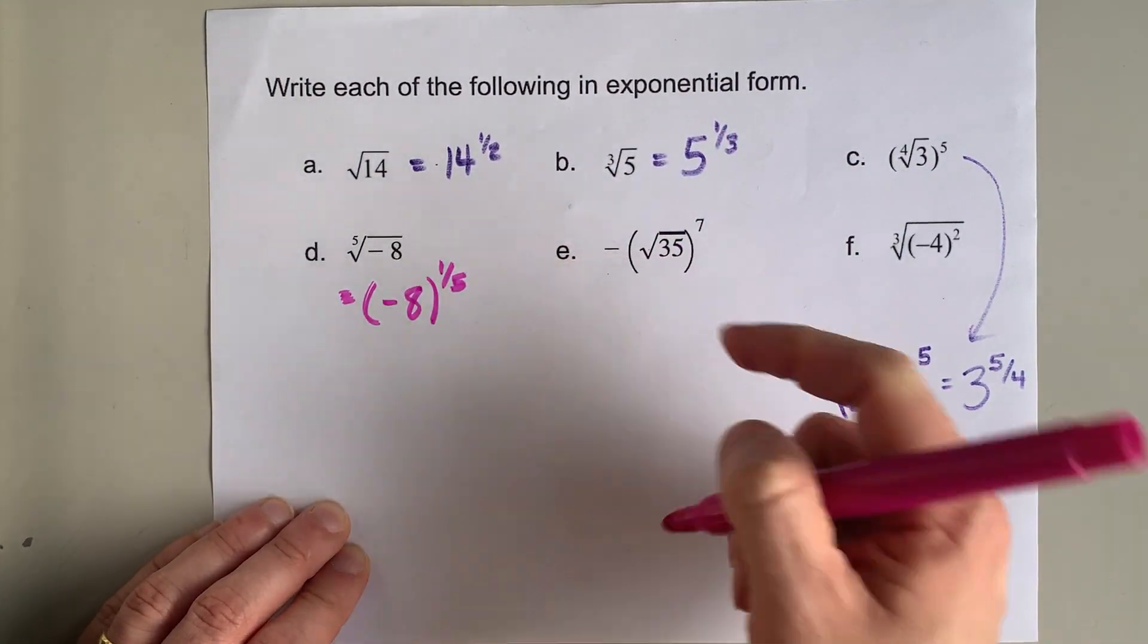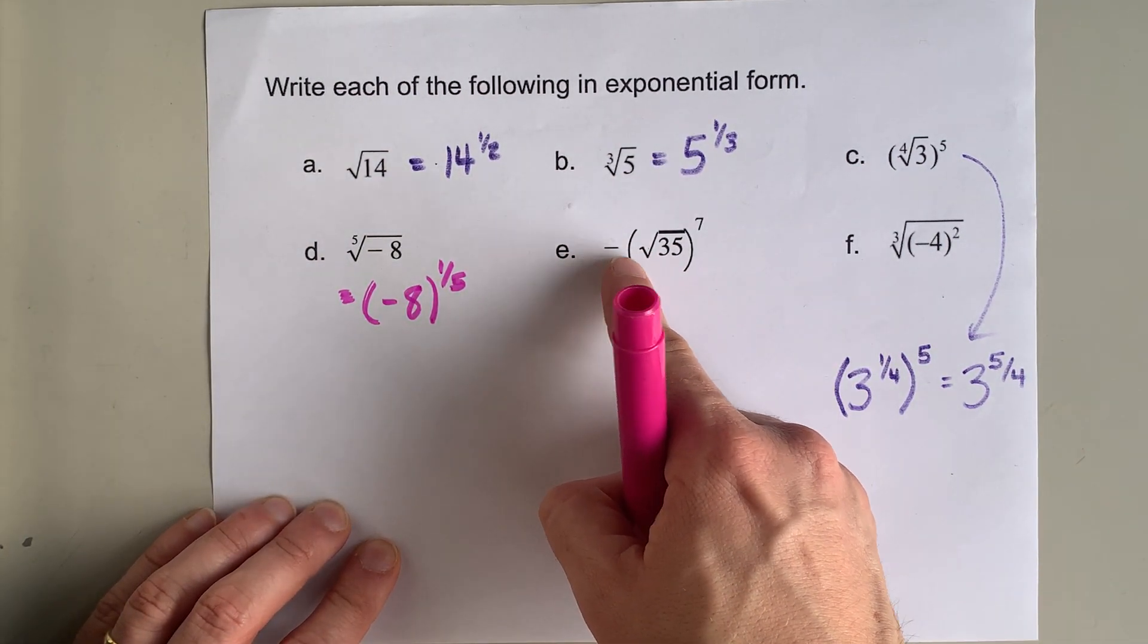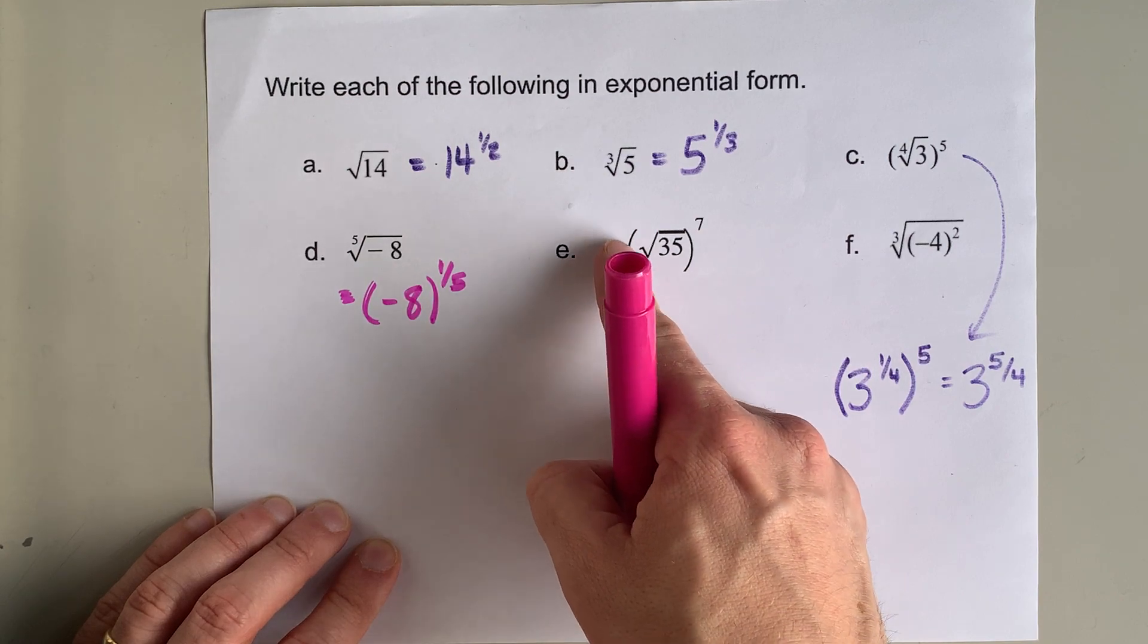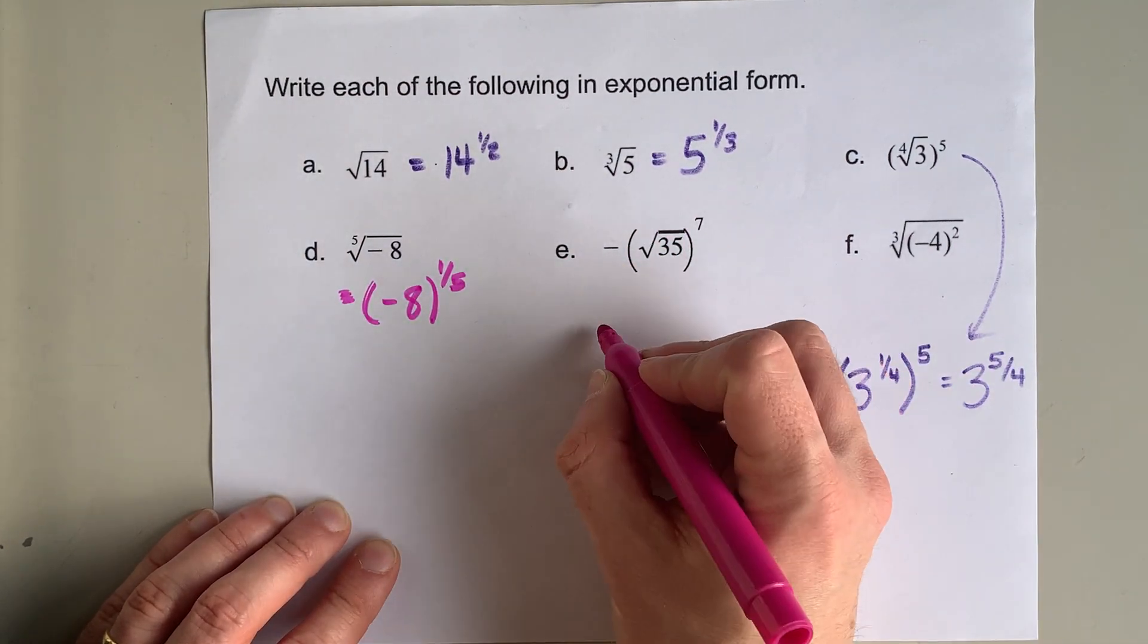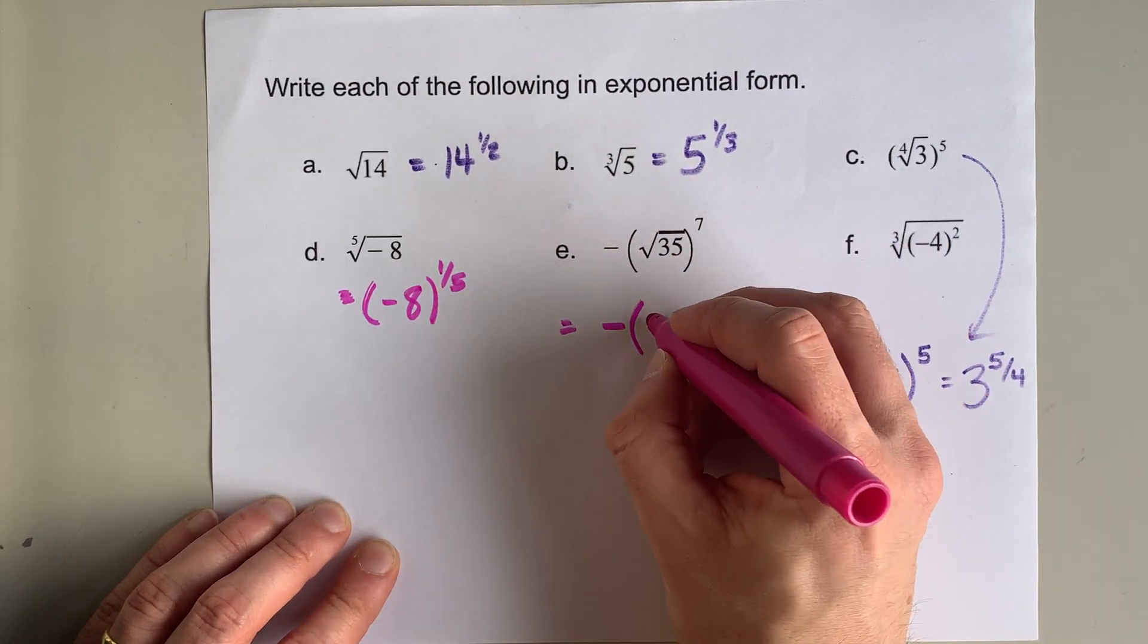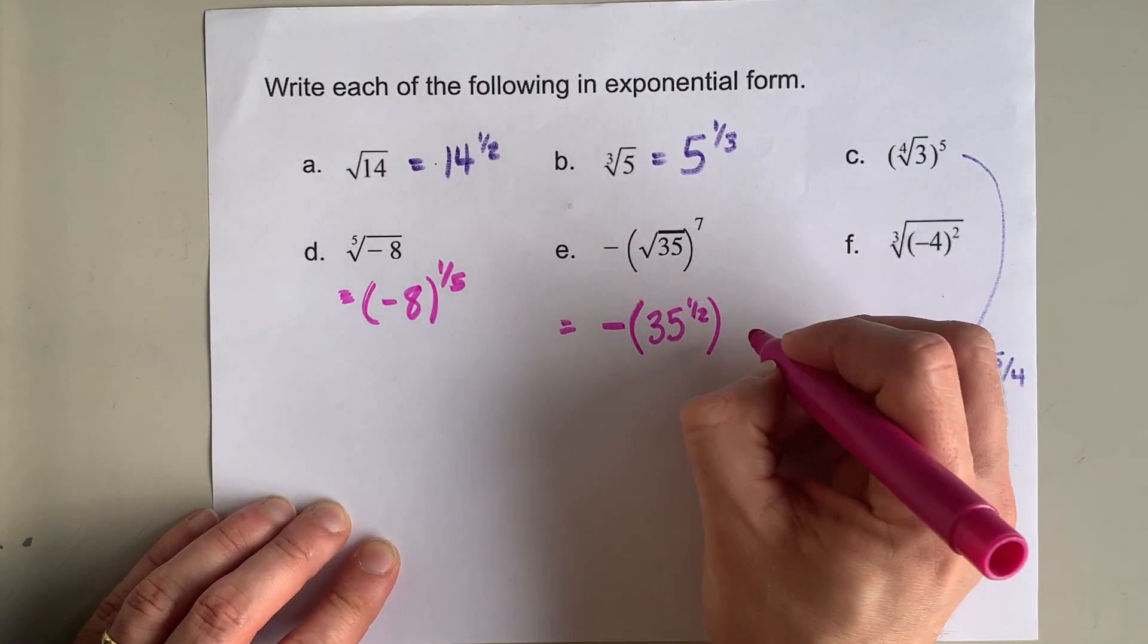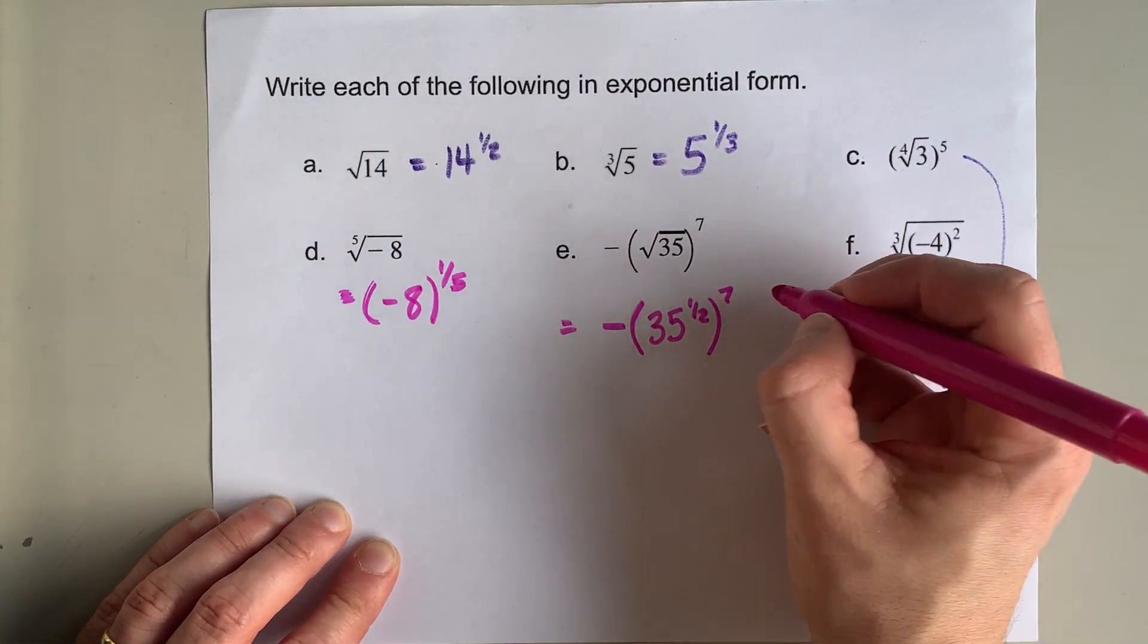Now, this is a regular square root. The negative here is outside of the square root, so we're not square rooting negative 35. I'm going to keep that negative out front here. I'm going to rewrite the square root of 35 as 35 to the power of a half, and it is raised to the power of seven.